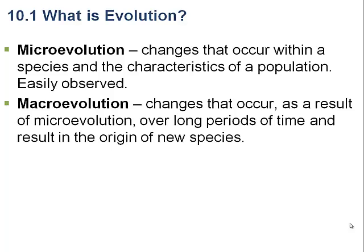Macroevolution is different. Macroevolution refers to changes that occur in a species that are very large in scale — specifically, the transition of one species to another. This requires very long periods of time and is not something we can test in the lab. Macroevolution relies on the fossil record and DNA evidence to support its occurrence. So we want to distinguish between microevolution, which is easily observed, and macroevolution, which cannot be observed because it takes such long periods of time.